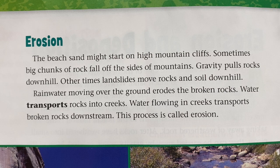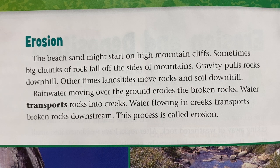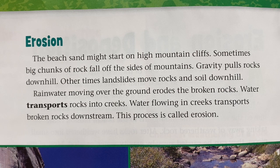Erosion. The beach sand might start on high mountain cliffs. Sometimes big chunks of rock fall off the sides of mountains — gravity pulls rocks downhill. Other times, landslides move rocks and soil downhill. Rainwater moving over the ground erodes the broken rocks, and water transports rocks into creeks.